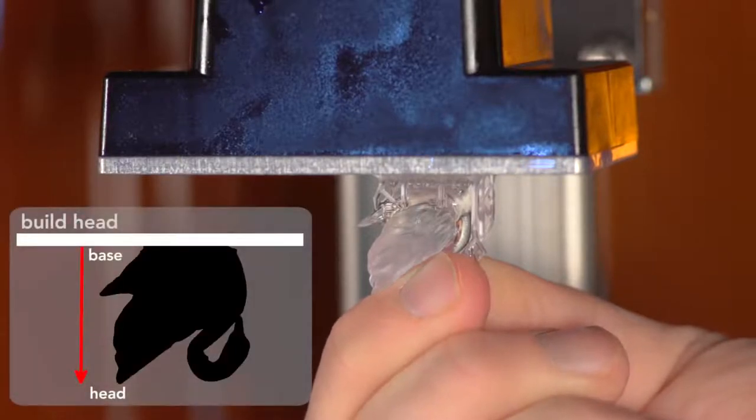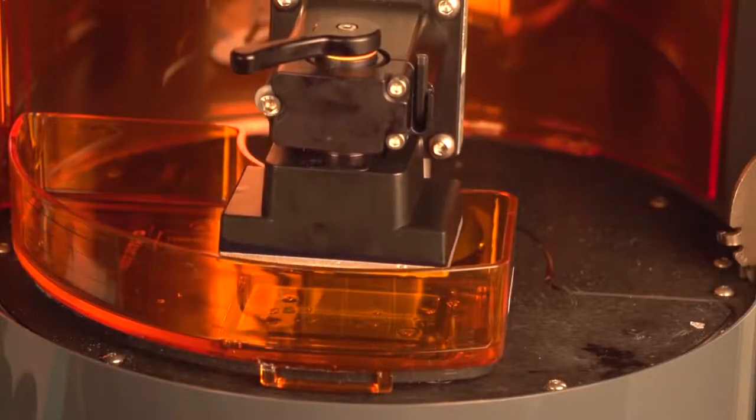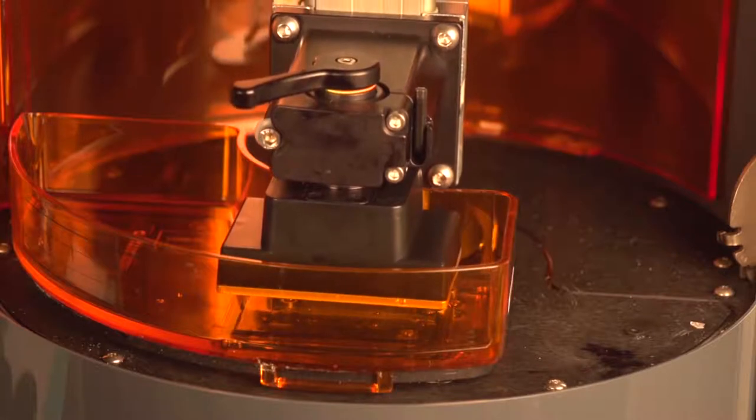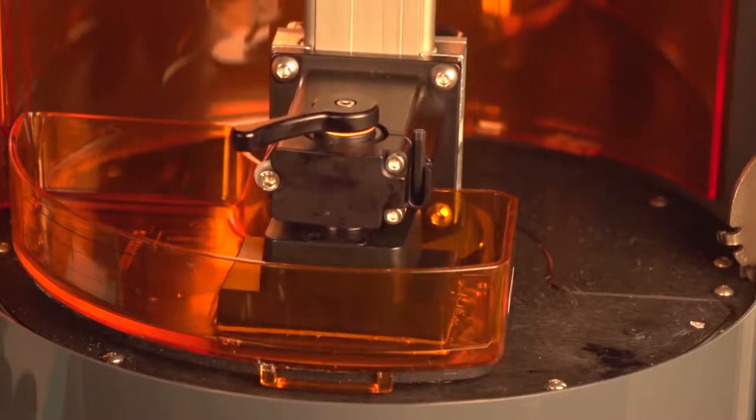The printer will first build the base, and then work its way to the swan's head. Let's watch the printer in action. The print head descends into this amber tray, which contains a liquid called resin, which will solidify. There, you can see the printhead settle into the resin.